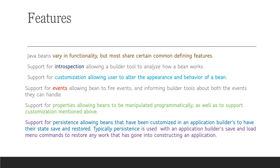JavaBeans features vary in functionality, but most share certain common defining features. Support for introspection allows builder tools to analyze how a bean works. Support for customization allows users to alter the appropriate behavior of a bean. Support for events allows a bean to fire events and inform builder tools about both the events they can fire and handle.